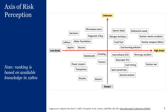Anything appearing in the upper right quadrant of Slovic's diagram would be considered a high risk perception threat. Importantly, a number of items in the upper right quadrant relate to radiation. This is germane to our presentation because when we talk about radiological threats, we cannot decouple them from the high risk perception that is attached to radiological threats.